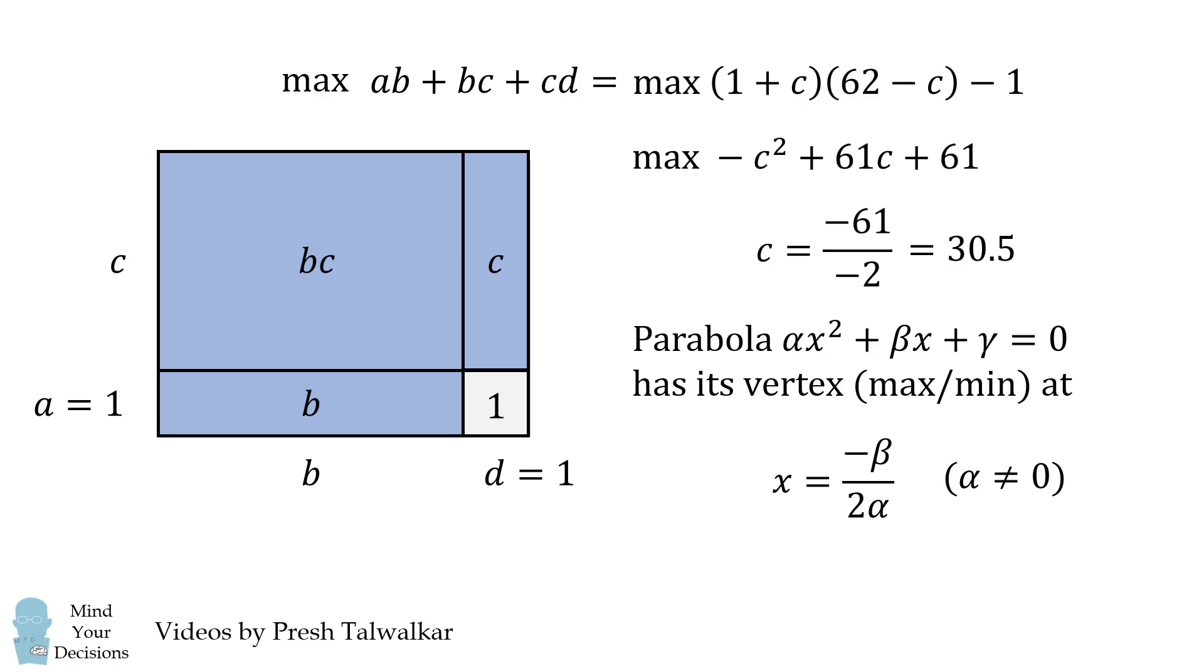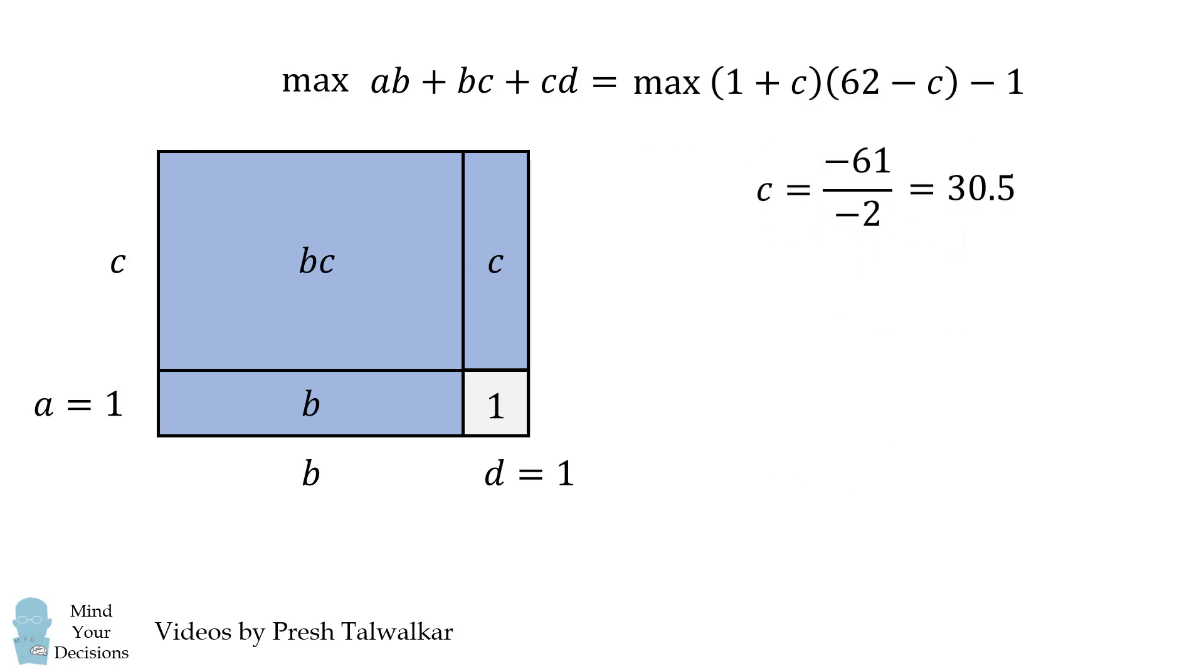But we're not done yet. Remember that C has to be a positive integer, so we'll try the closest integer values of C is equal to 30 and C is equal to 31. We also want the maximum value, so let's calculate this.